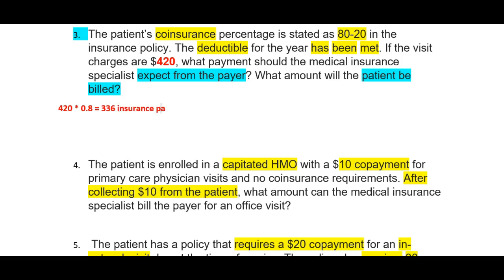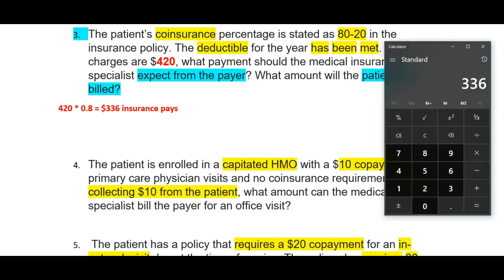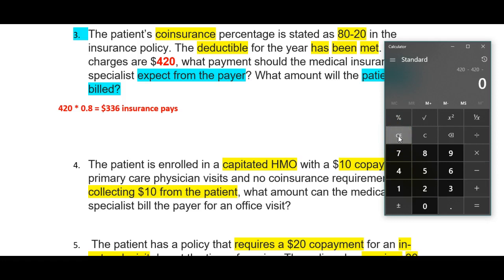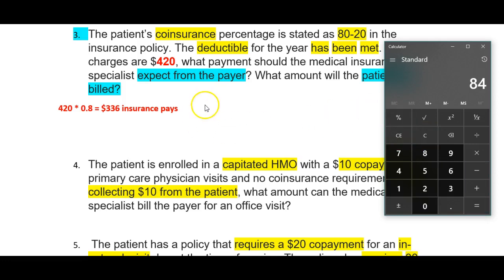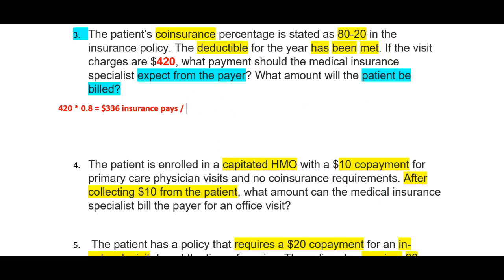Insurance pays $336. And $420 minus $336 is $84 that the patient pays.